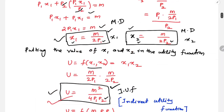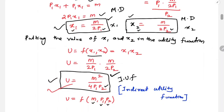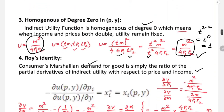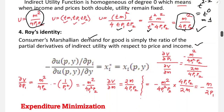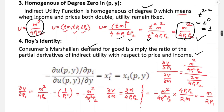We already found the Marshallian demand functions: x1 = M/(2p1) and x2 = M/(2p2). Now let's verify Roy's Identity using our indirect utility function V = M² / (4·p1·p2).